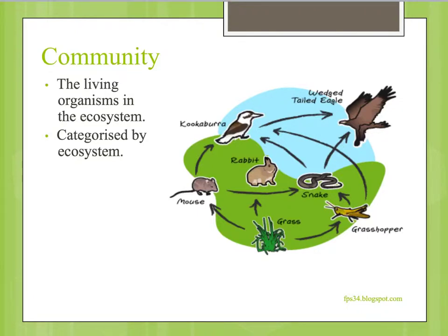Going down another layer of complexity, we would now be looking at the community within that ecosystem. It will generally be named after the ecosystem itself because the community is simply made up of the biotic factors within that ecosystem — all of the living organisms and how they interact with each other. The particular picture here is a food web from a typical Australian ecosystem showing the feeding relationship between all of the organisms, but there may also be relationships such as pollination of flowers or symbiotic relationships.